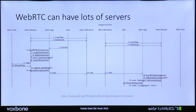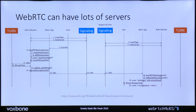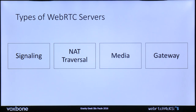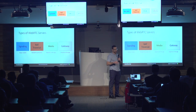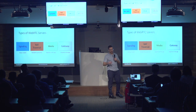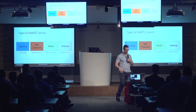If you go into more detail — and this is actually from the W3C WebRTC spec — there are actually a lot of elements here. It's not just two little browsers, and a bunch of these are actual servers. There are four main types of servers in WebRTC: signaling, which you always need; NAT traversal, which is really important especially for production environments; and media servers and gateways, which are really application-dependent.